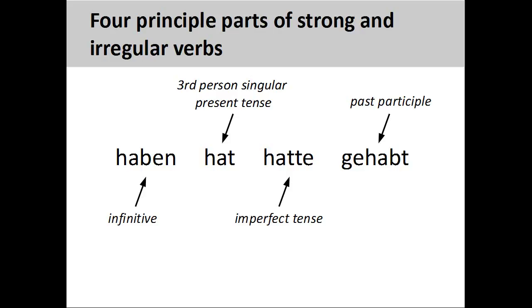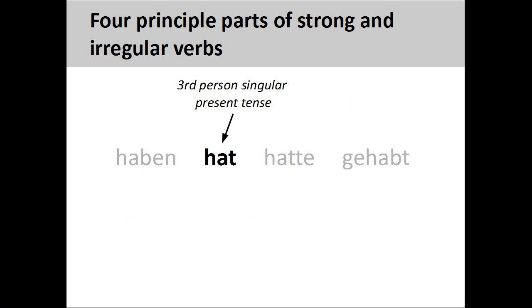Whatever they are called, you can find lists of these verbs and their four principal parts in your book or on the internet. It is very important to memorize these four principal parts, as they will help you in your future study of German. As this presentation focuses on the present tense conjugation of strong and irregular verbs, we will only be dealing with the second principal part, the third person singular present tense verb form. We will look at the other principal parts in future presentations.